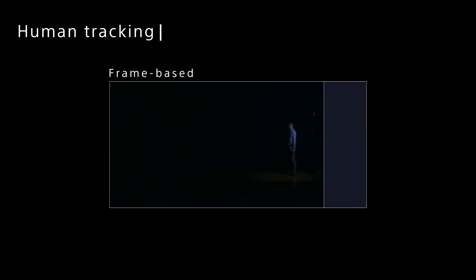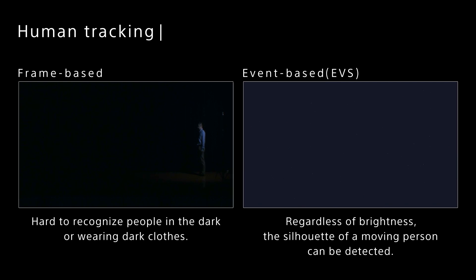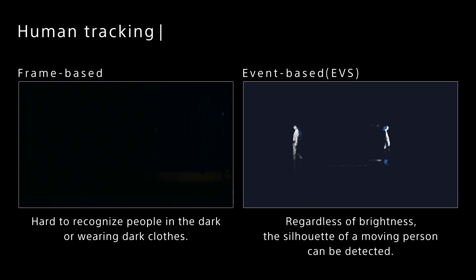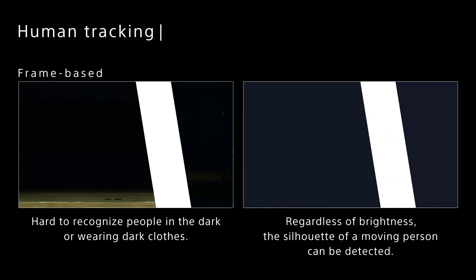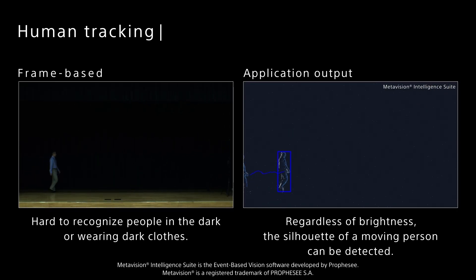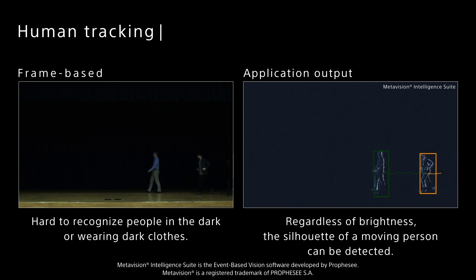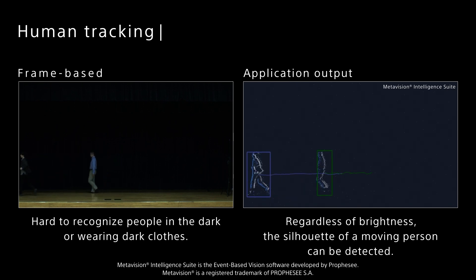Human tracking. With the event-based vision sensor, it is possible to extract the silhouette of a moving person, regardless of the shooting environment. The sensor only outputs the data related to the moving person, nothing else. The right image is the result of a machine learning model. They are recognized as pedestrians, even in the dark. The recognition is sustained continuously, even if the targets run, overtake, etc.